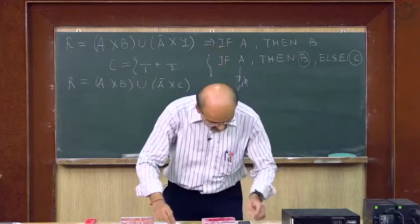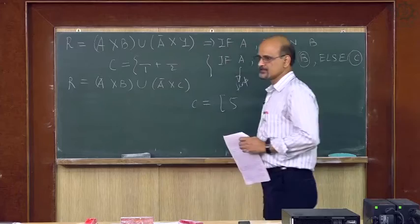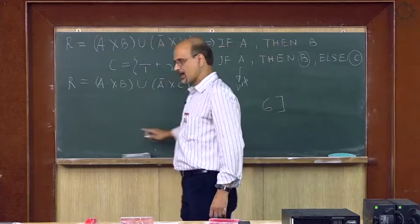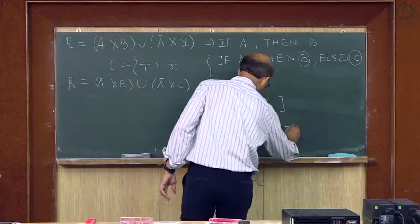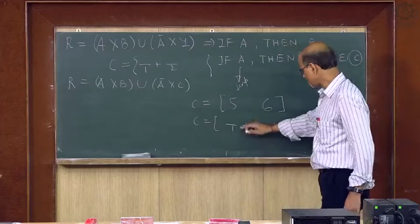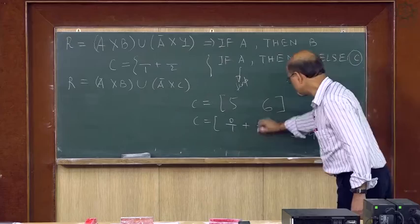I am not doing this example — you can do it yourself. Suppose I take C as {5, 6}. With this, you can have the relation matrix R. Your Y was {1, 2, 3, 4, 5, 6}. In Zadeh notation, C equals: for 1 it is 0; 5 and 6 will be 1, and others are 0.